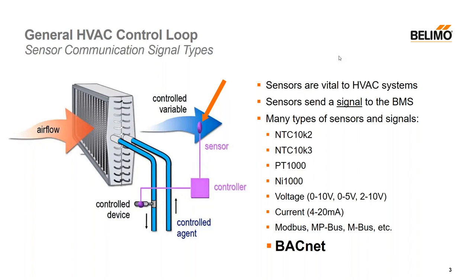The sensor is measuring the temperature of the air coming through the coil. The sensor itself then sends a signal to the local controller, and the controller then takes action based on how it's programmed. The signal sent from the sensor to the controller can come in many different variants. Generally speaking, there are numerous passive temperature signals such as NTC 10K2, 10K3, PT1000, Nickel 1000, and so on. There are also analog signals available in the form of voltage and current — could be zero to 10 volts, zero to five volts, two to 10 volts for modulation.